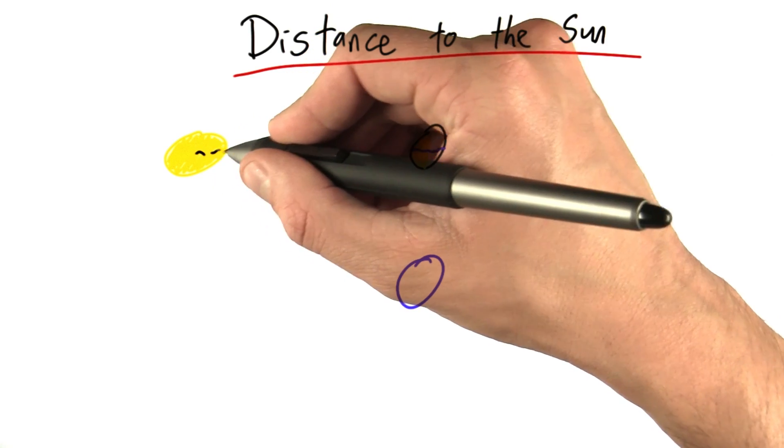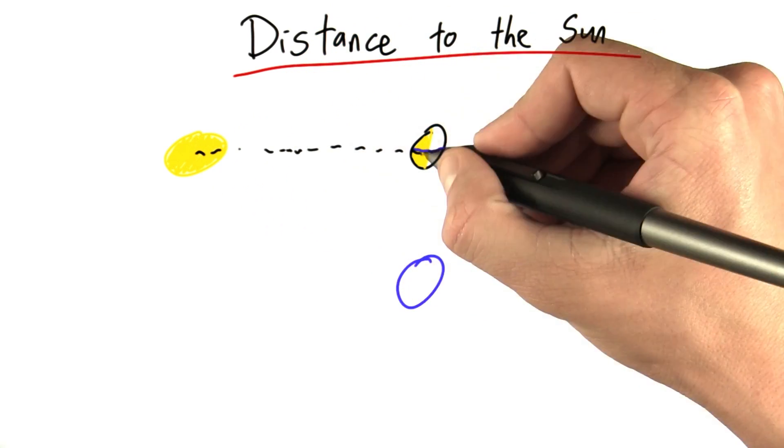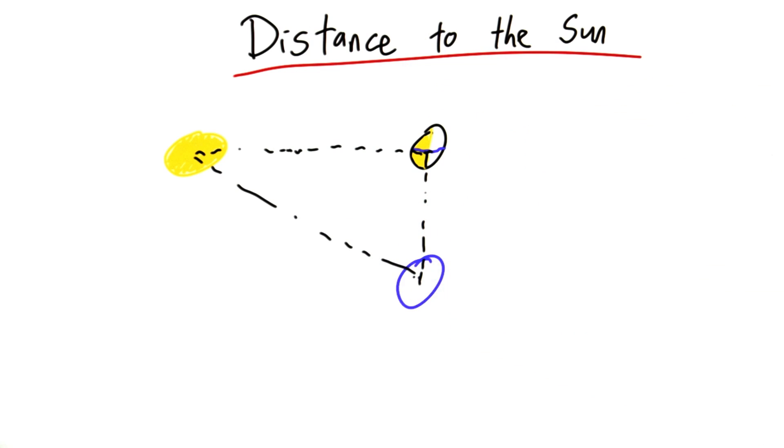You can maybe guess that we can draw a right triangle between the Earth, the Sun, and the Moon.